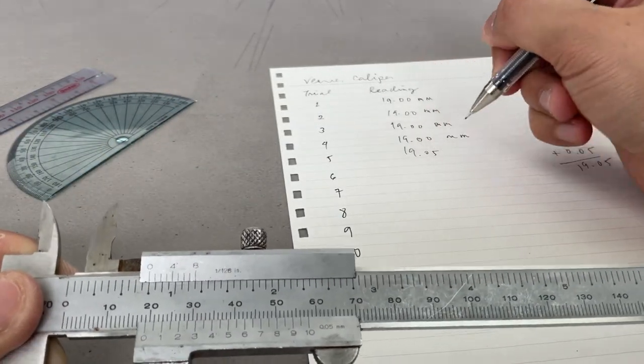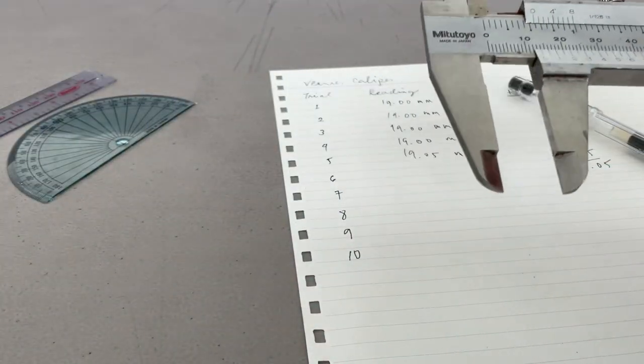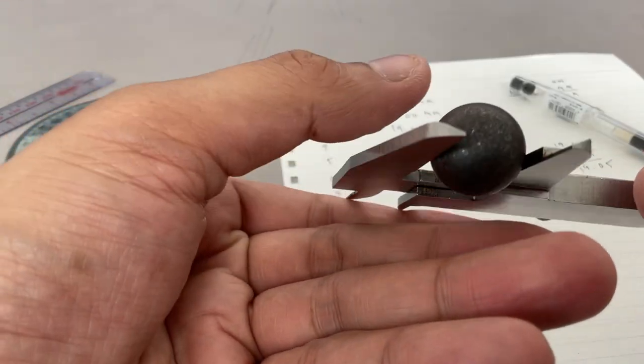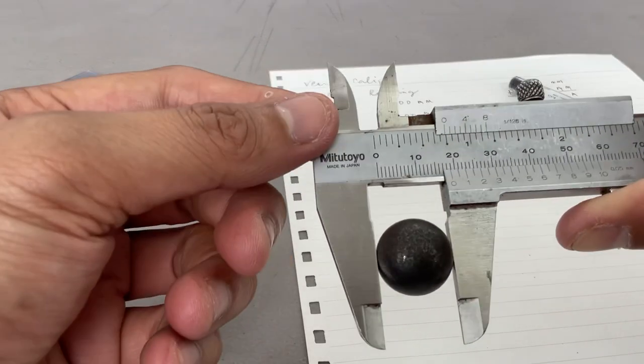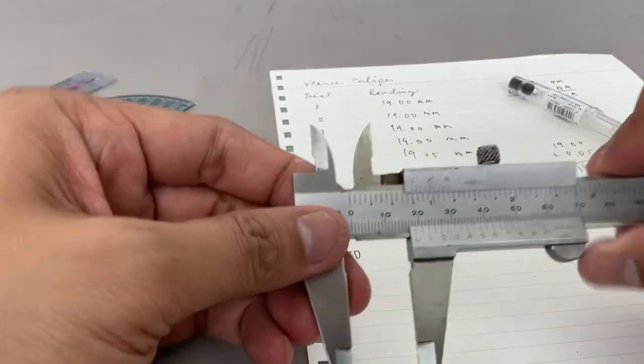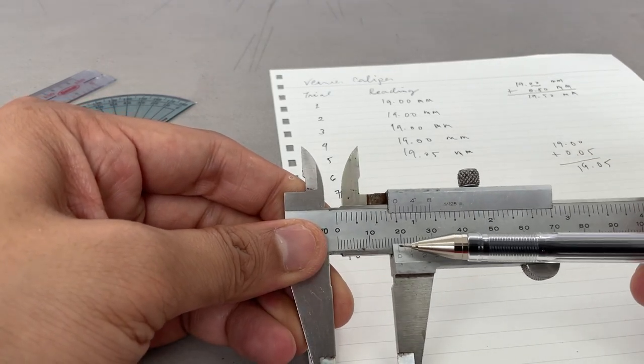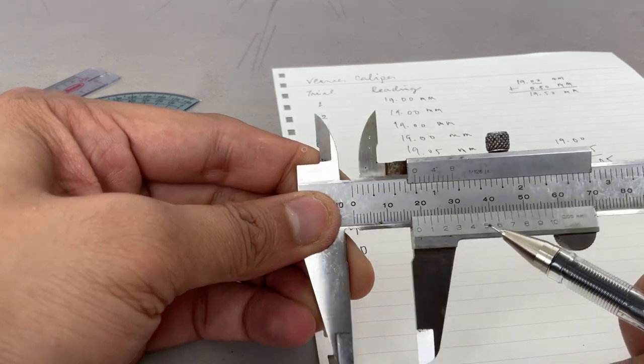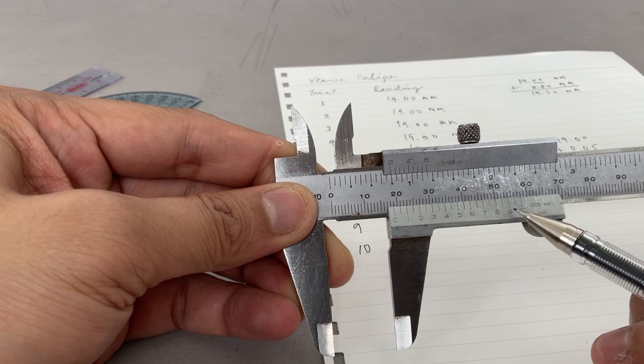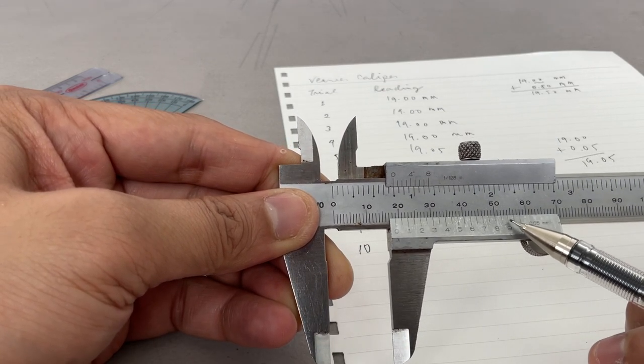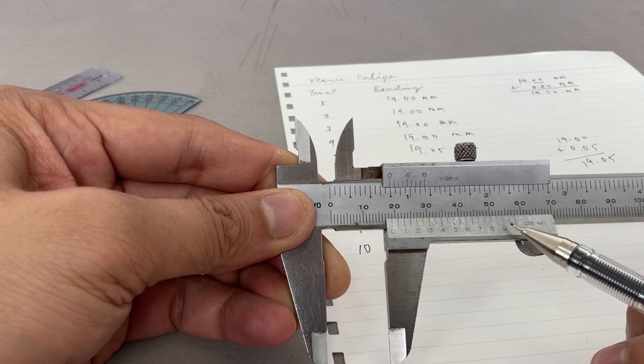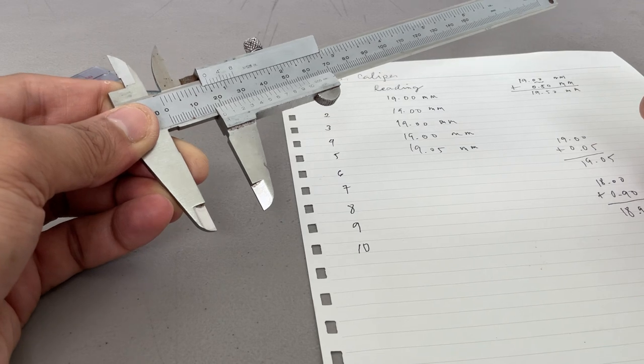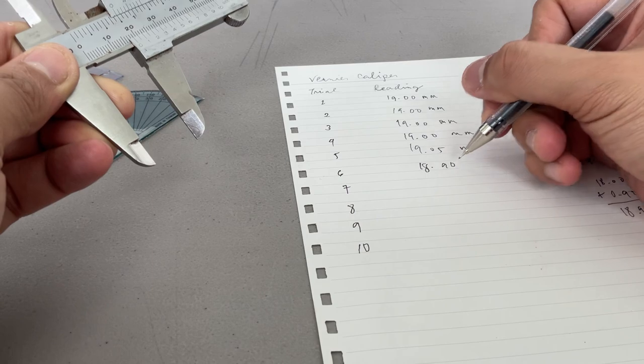So for my trial number 5, 19.05. So perhaps you can do another trial. So this one is, hindi siya umabot ng 19, so 18 siya. So we can write 18.00 plus kung saan na perfectly coincides. I think sa 9, sa 0.9, plus 0.90. So now it's 18.90 mm. So our trial number 6 is 18.90 mm.